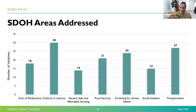Similar to types of service, initiatives address multiple barriers, which is why these will also add up to more than 40. Most initiatives address cultural or literacy barriers, followed closely by transportation at 27, and screening for unmet needs at 24. I also want to call your attention to the 21 entries that address food security in this edition — an increase from only 13 initiatives in last year's second edition. Decent, safe, and affordable housing had the lowest representation with 14 initiatives addressing this area.